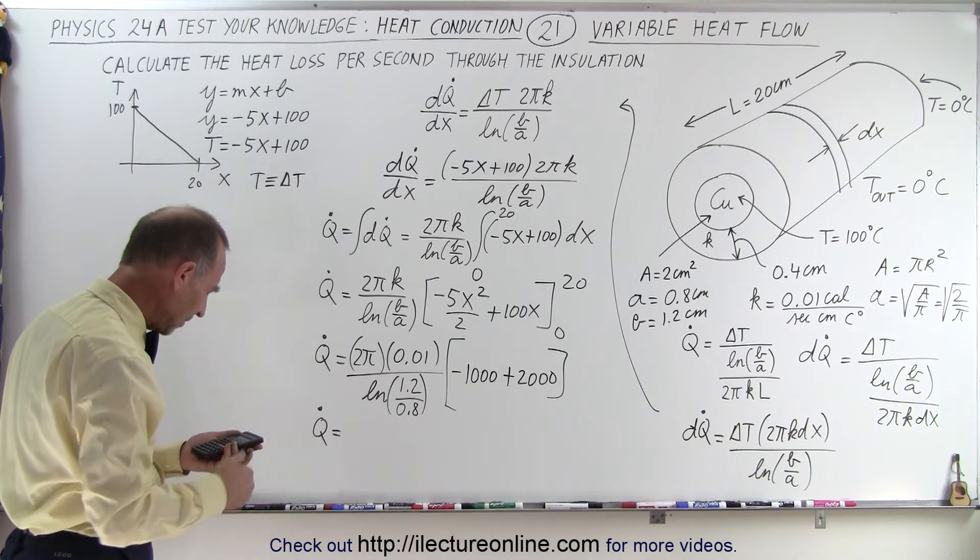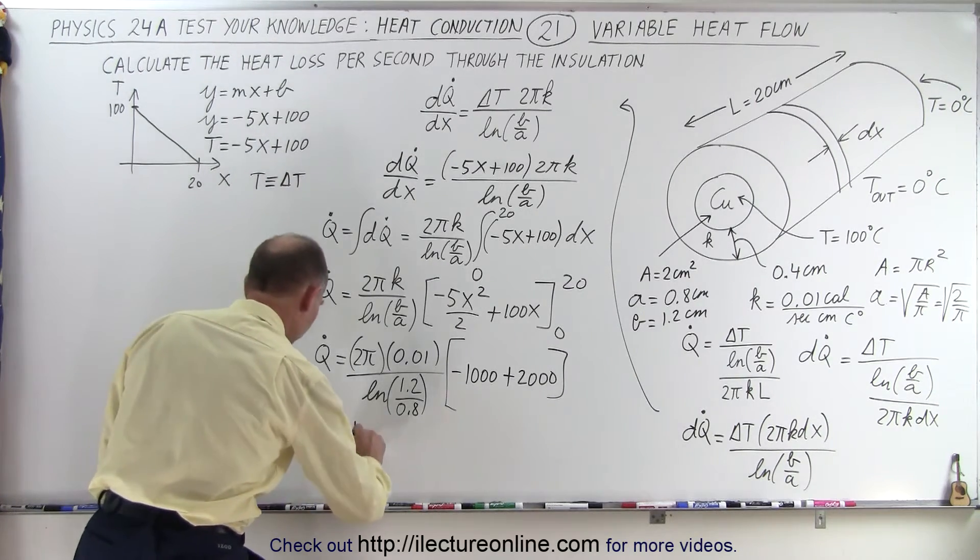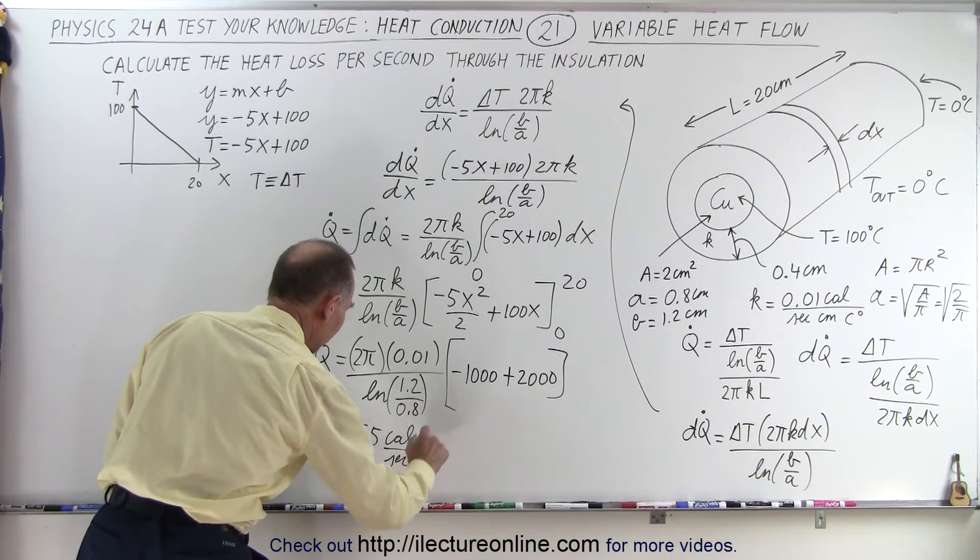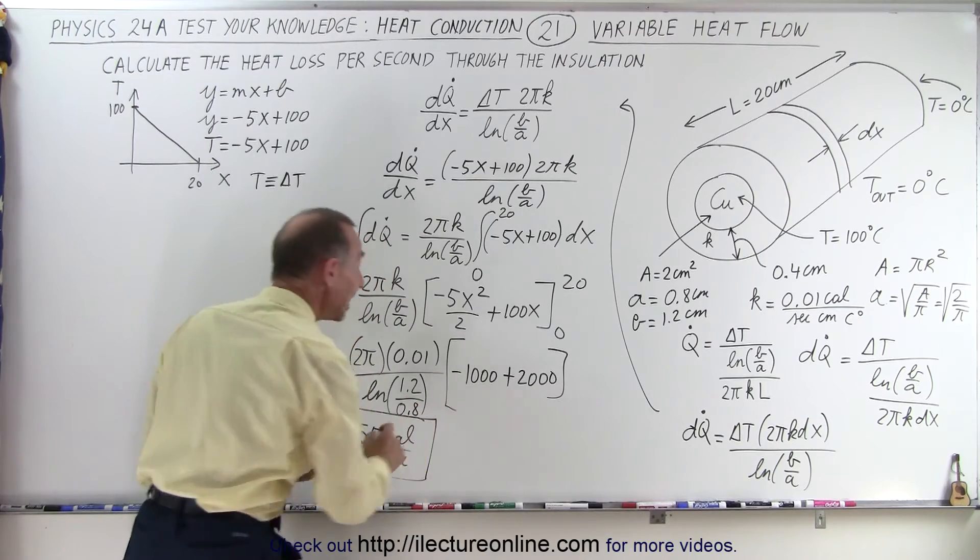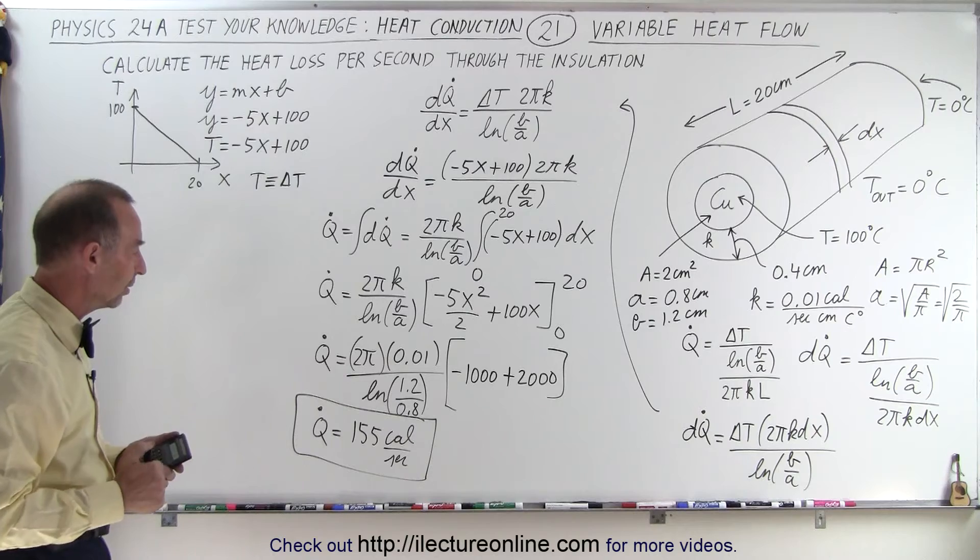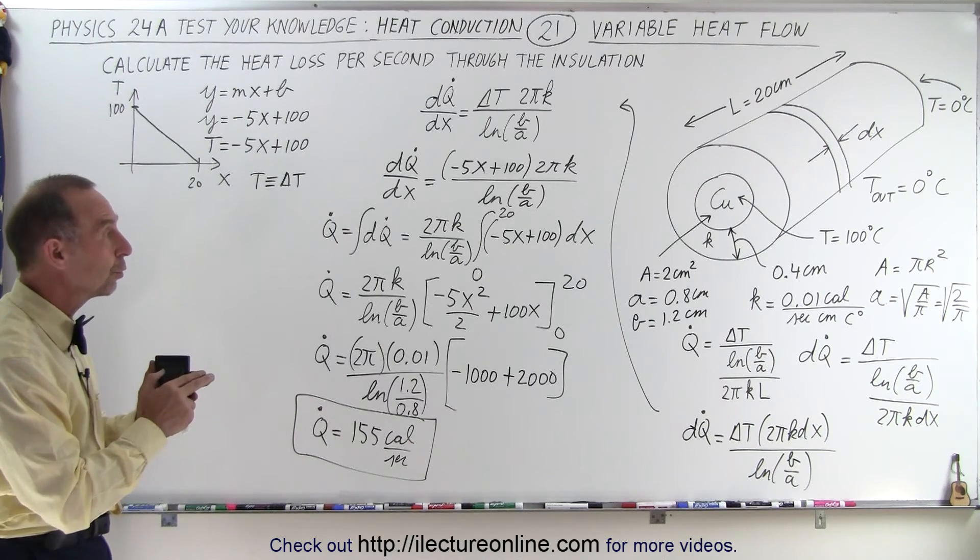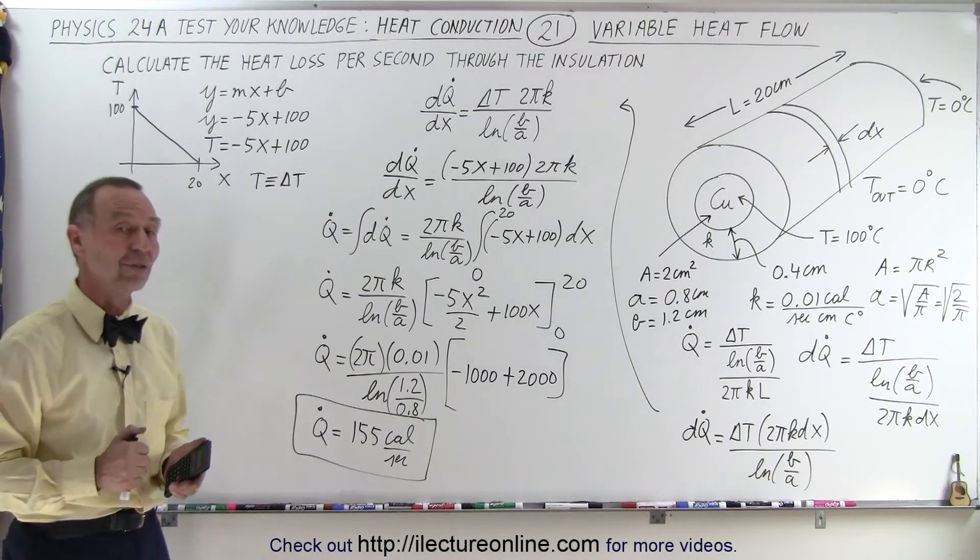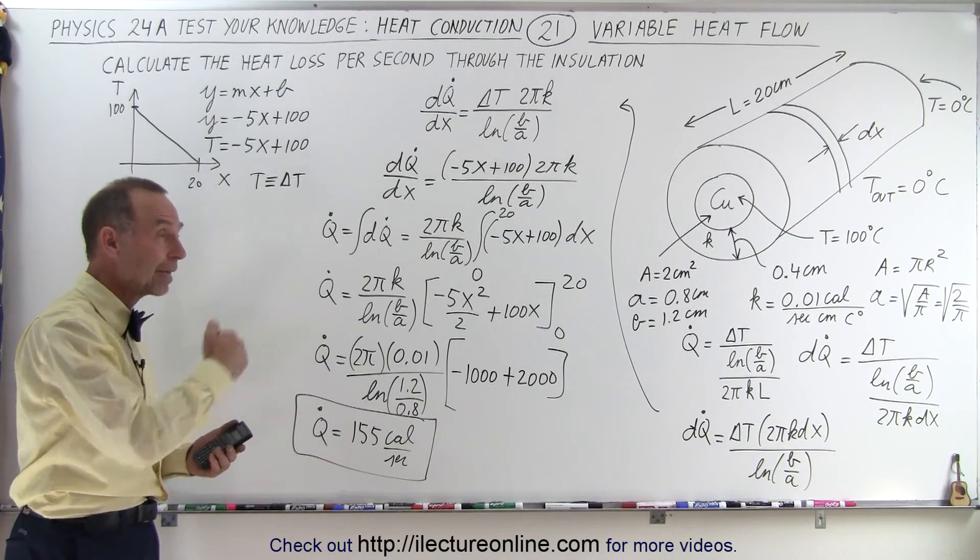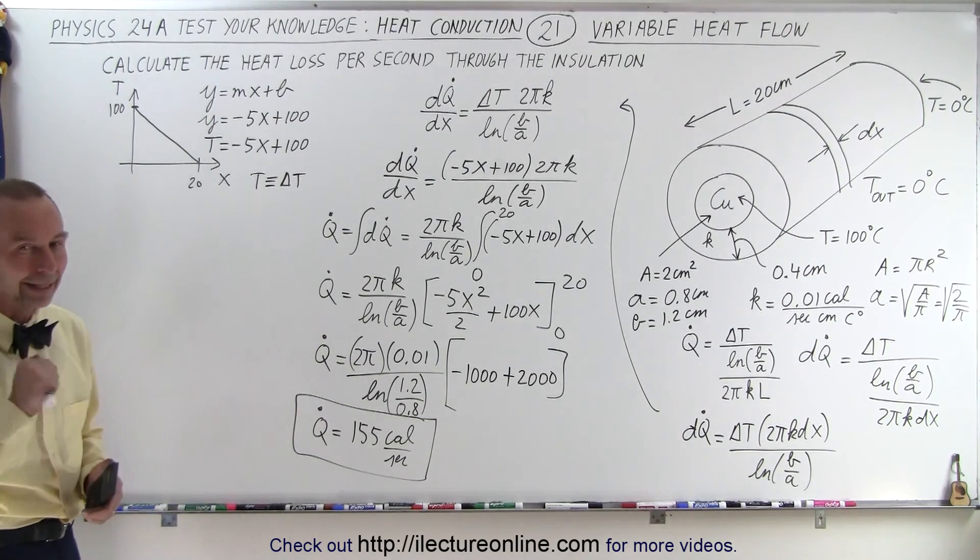155 calories per second will be the total heat flow through the insulating material from front to back all added together. So that's the total heat flow through the insulating material. Notice that it differs in the front, much greater, in the back it's much smaller. And that is how it's done.